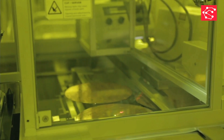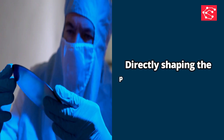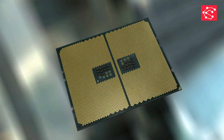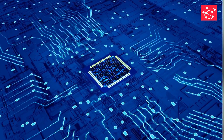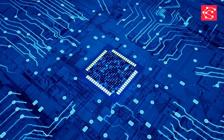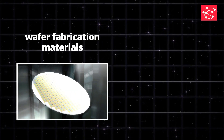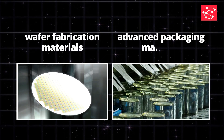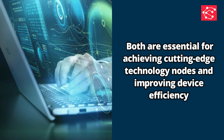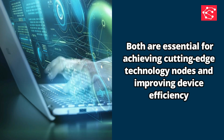Electronic chemical materials play a crucial role in semiconductor manufacturing, directly shaping the performance, reliability, and scalability of modern chips. These materials are divided into two major categories: wafer fabrication materials and advanced packaging materials. Both are essential for achieving cutting-edge technology nodes and improving device efficiency.